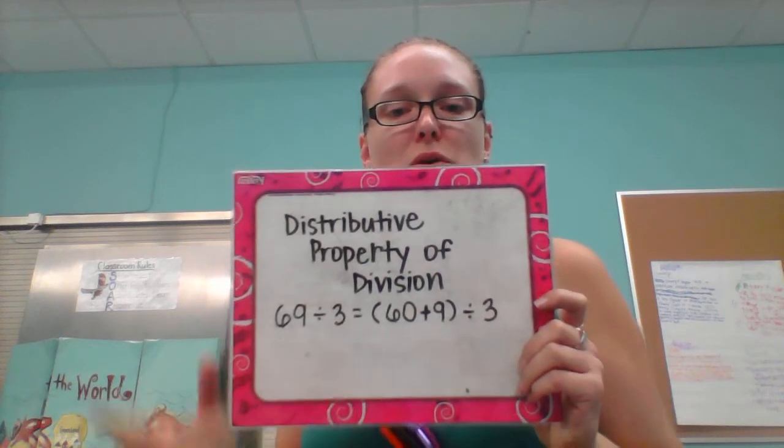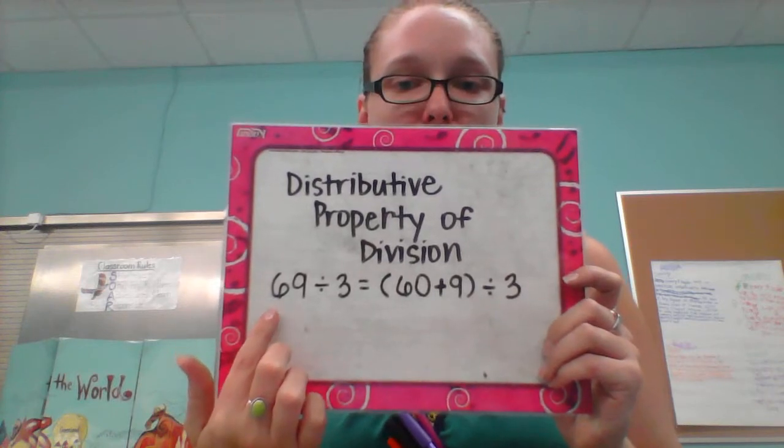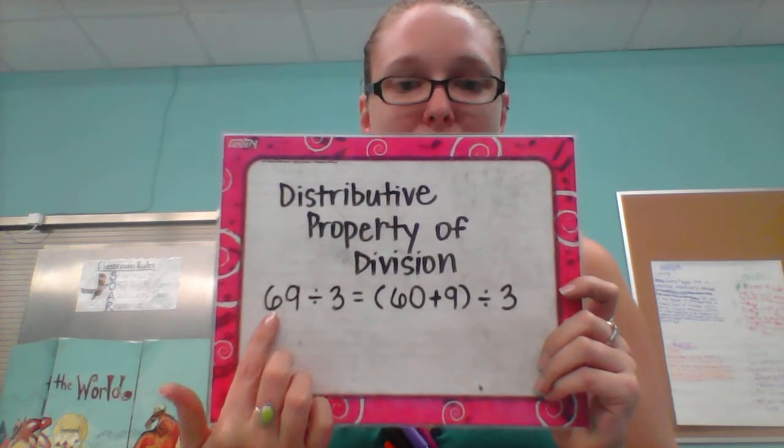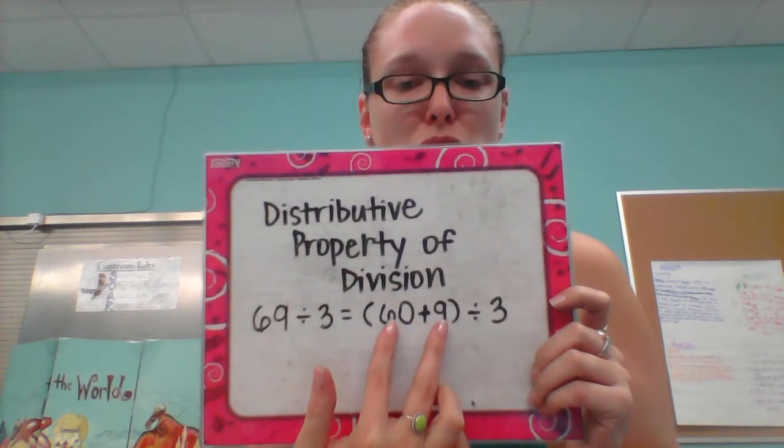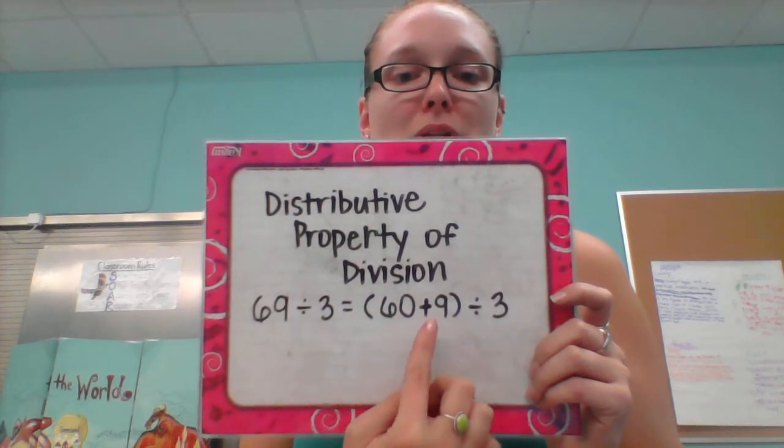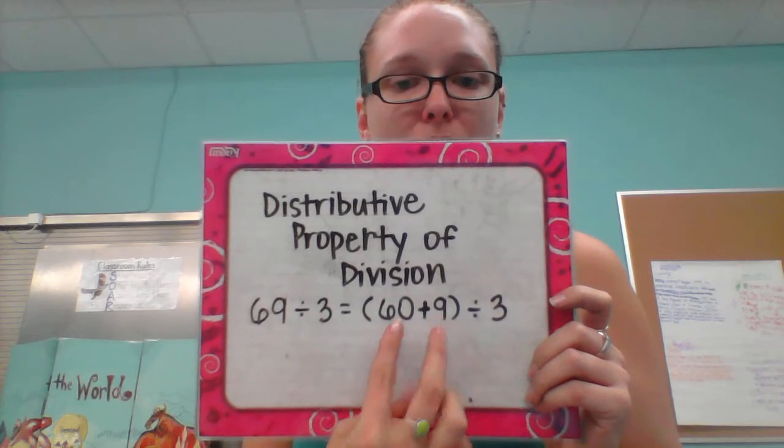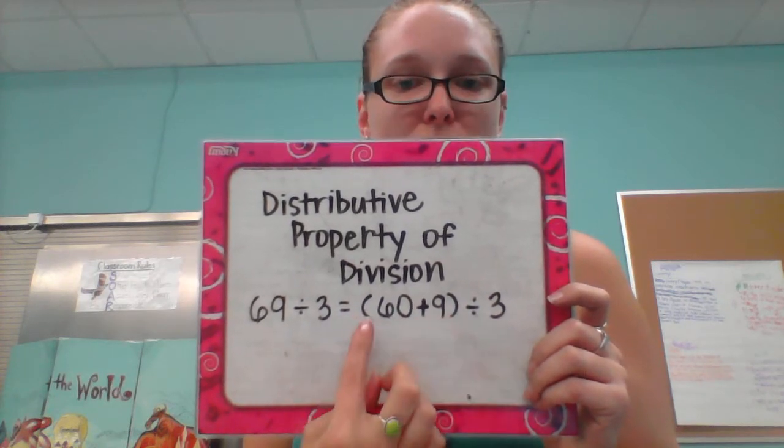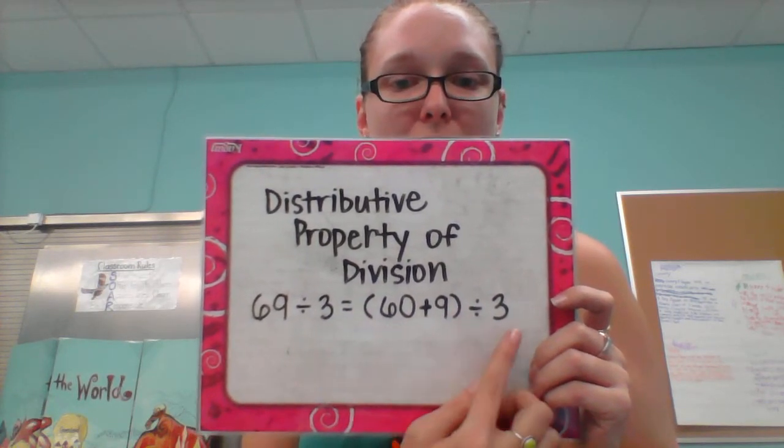Okay, so the first step we would do is to take the dividend, break it into two chunks and so we've got two addends now and then they're in parentheses. So 60 plus 9 in parentheses divided by 3.